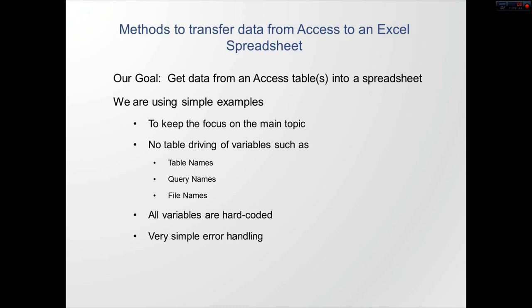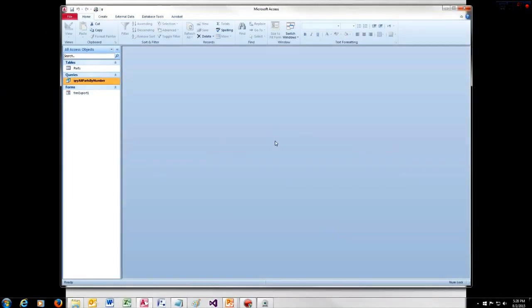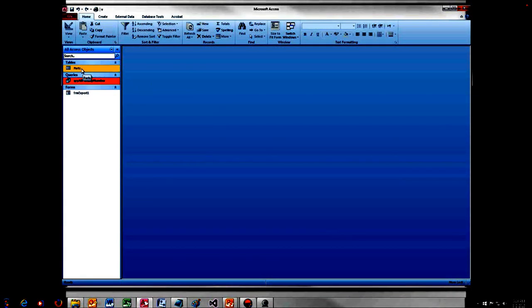So in this video, our goal is simple: we want to get data from Access into a spreadsheet. I'm using a very simple example — I'm not building out a fully productionized database. I want to focus just on the topic of transferring the data and not worry about table-driven variables, query names, file names, prompting users for file names, and all that. Everything's going to be hard-coded in this example, and I've got very simple error handling in the database, just enough for us to see if an error occurs. Let's go over to our database.